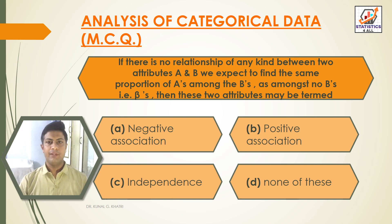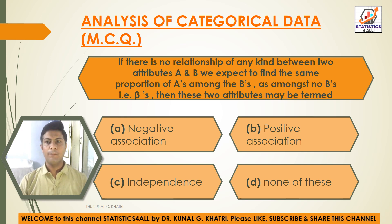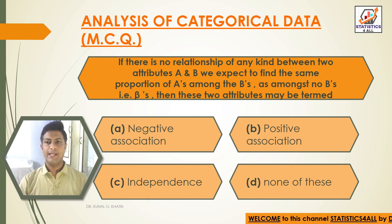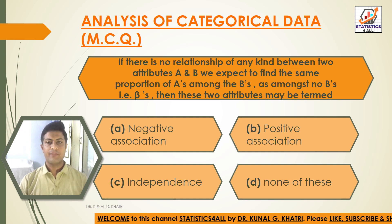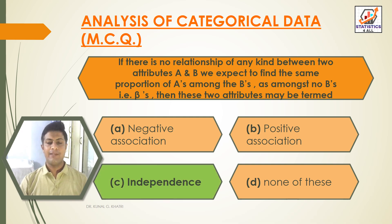Next question: if there is no relationship of any kind between two attributes A and B, we expect to find the same proportion of A's among the B's as amongst not-B's (beta's). Then these two attributes may be termed as — option A: negative association, option B: positive association, option C: independence, option D: none of these. The answer is option C — these two attributes may be termed as independent attributes.